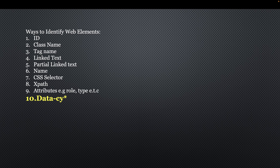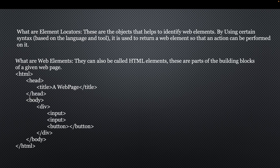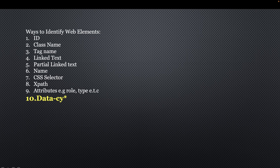ID is regarded as one of the most stable locators, and so is class name. The tag name is always constant — just as we saw in the HTML tags, you can identify elements by their tag name. For example, to identify a button, the tag name is 'button', and you can combine it with some attributes to identify it. You can also identify elements by link text and partial link text.